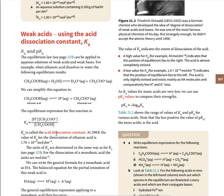The equilibrium constant Ka is given as the concentration of H⁺ times the concentration of the conjugate base — in this case ethanoate ion — divided by the concentration of ethanoic acid. Ka is called the acid dissociation constant. At 298 Kelvin, the Ka for ethanoic acid is 1.74 × 10⁻⁵.